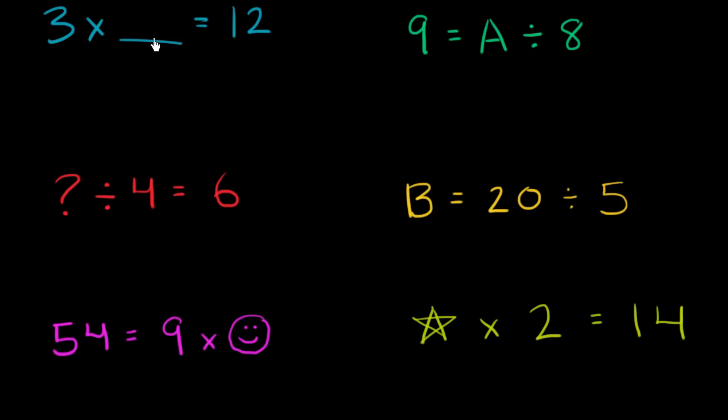So let's think through each of them. This says 3 times something is equal to 12. So let's think about what we have to multiply by 3 to get to 12. So 3 times 1 is 3, 3 times 2 is 6, 3 times 3 is 9, 3 times 4 is 12. So we could say that the blank needs to be equal to 4. 3 times 4 is 12.